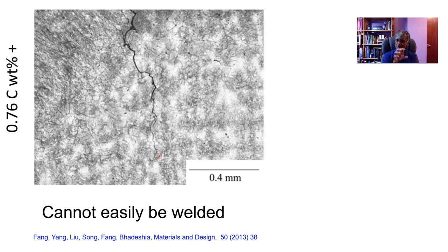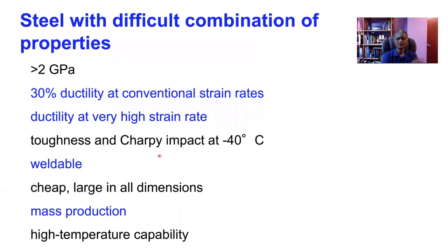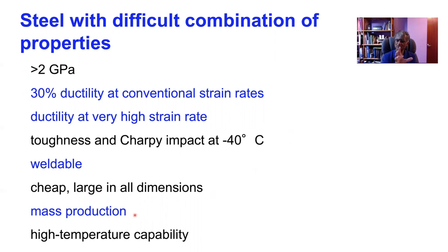So 0.4 weight percent carbon equivalent is the ballpark I want to aim at to get tough martensite. Supposing we had to create a steel with a difficult combination of properties: a strength of the order of 2 gigapascals, large ductility at both conventional and high strain rates, a toughness and Charpy impact at minus 40 degrees centigrade of the order of 30 joules — and it must be weldable, cheap, large in all dimensions, and capable of mass production. This is a formidable challenge.